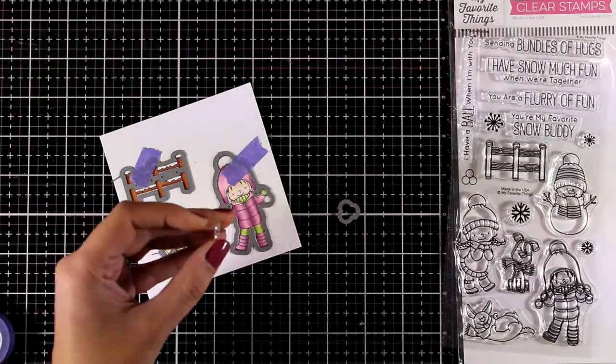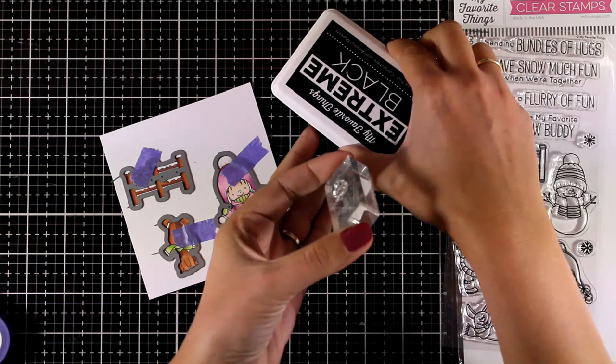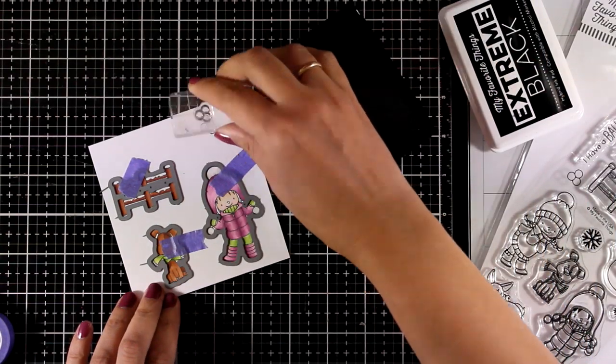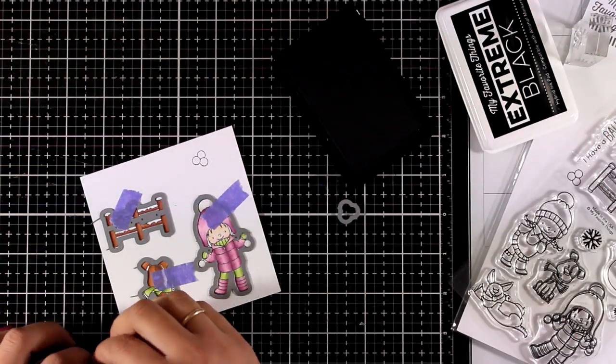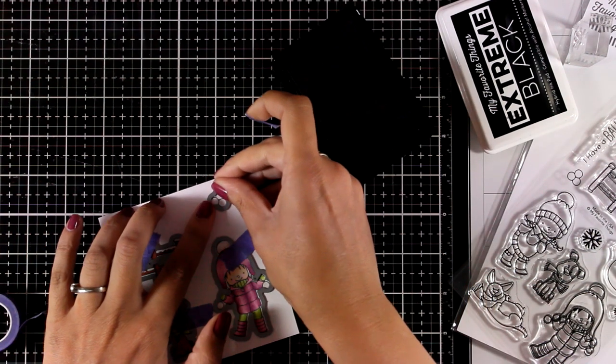This is where I decided that I'm going to have some snowballs so that's why I'm going to stamp them now. And then place the die on top as well so that I can cut out all the images with one pass.